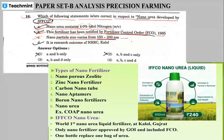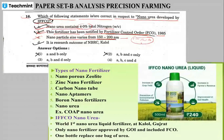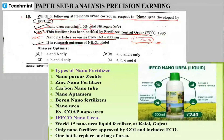The answer is clearly about nano particle size. The size is between 100 to 200 nanometers. Nano materials have special properties at that scale. Option D: it is a research outcome of the Nano Biotechnology Research Center — that is also noted.